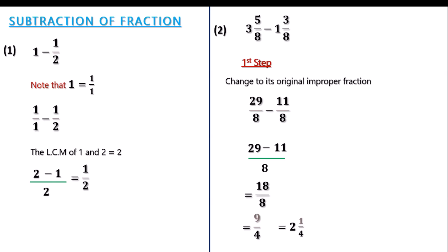Invariably, we can state that 3 whole number 5 over 8 minus 1 whole number 3 over 8 is also the same as 2 whole number 1 over 4.